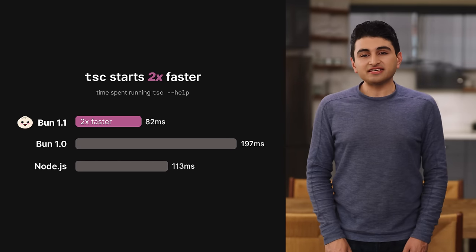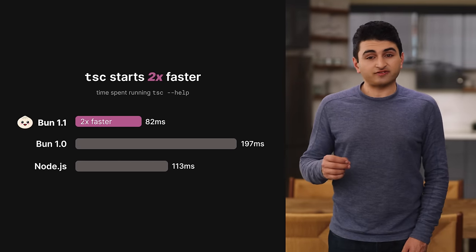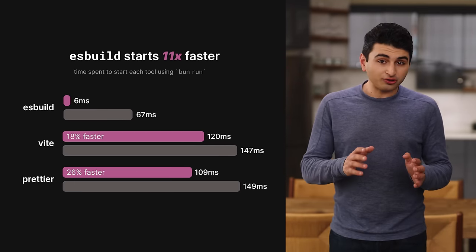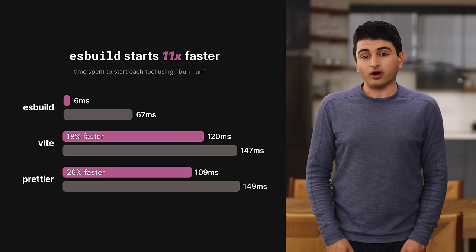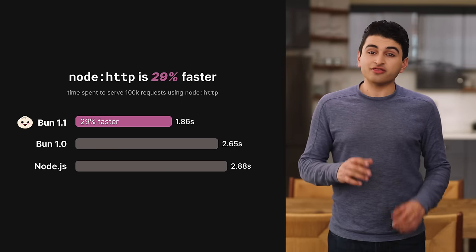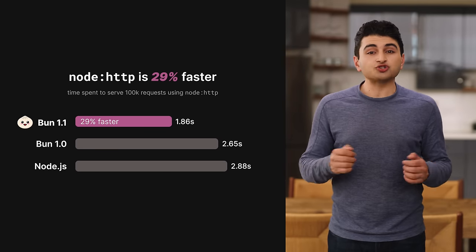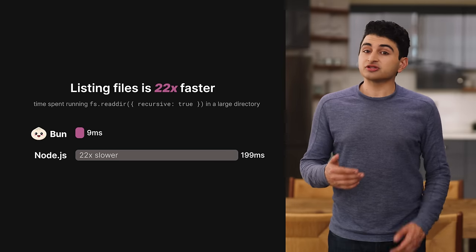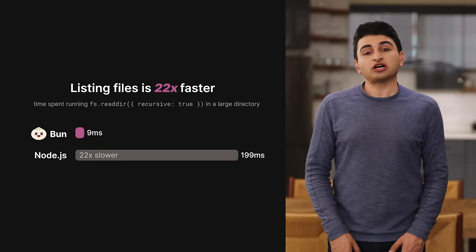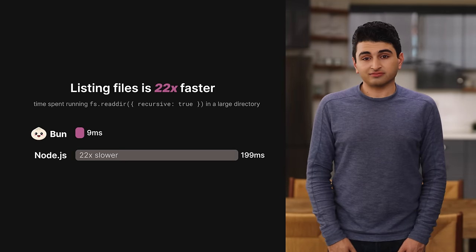BUN is fast. In BUN 1.1, we've made it even faster. Command-line tools like TSC start two times faster than in BUN 1.0. ESBuild starts 11 times faster. Vite and Prettier both start faster in BUN 1.1. We've also optimized a ton of Node.js APIs. The Node HTTP server is 29% faster than in BUN 1.0, and using FS Reader to list files in a directory is 22 times faster than in Node.js.